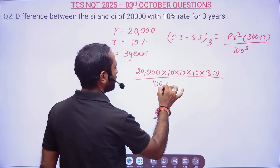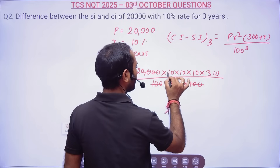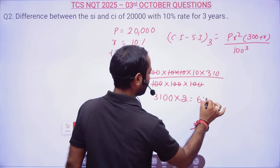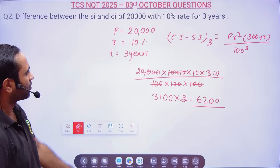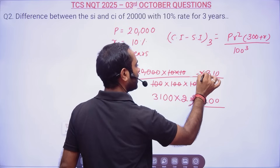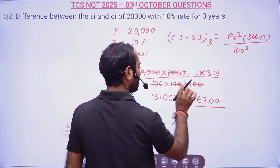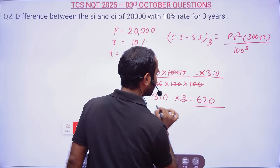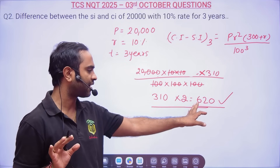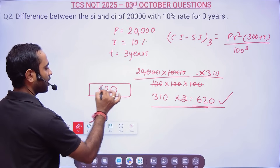So 100³ = 100 × 100 × 100. Now 20,000 gets cancelled. So it will be 310 — but wait, I've taken one extra zero. I'm sorry for that. So it will be P × R² = 10 × 10, and then 300 + R. So one zero will become less here — it will be nothing but 620. So 620 will be the correct answer. If it is option-based you select 620; if it is fill-in-the-blanks you write 620.